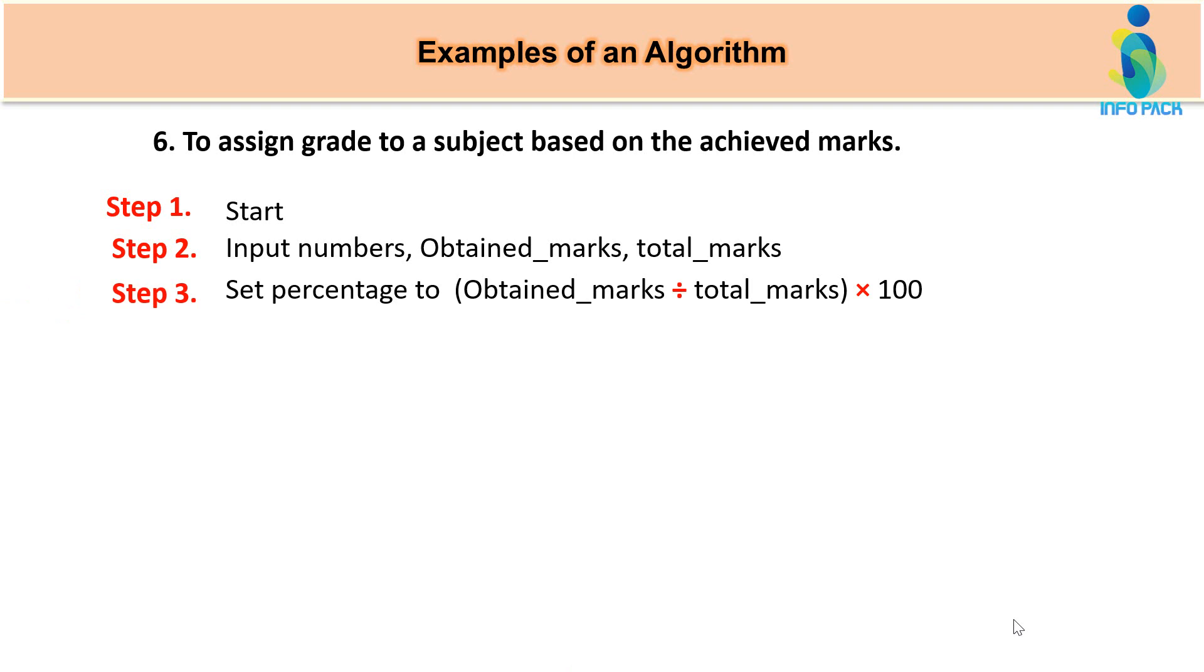Step three meh hum kya karenghe. Percentage variable to, yarni percentage eek variable hai. Jiske inder kya store hooga? Percentage. And percentage find out karne ka farmula kiya hota hai? Obtain marks divided by total marks and multiply by 100. If percentage is greater than 80, toh kya karo? Set grade to a plus. Agar 80 above percentage a plus grade assign kiya jayega. Else kiya kiya jayega? Next condition me chala jayega.